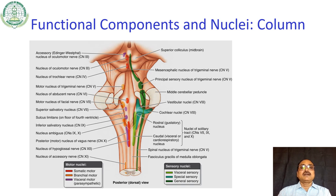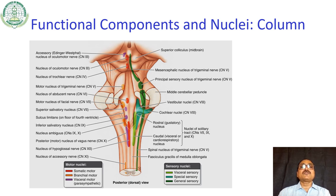The functional components can be categorized into motor nuclei and sensory nuclei. In motor, they may be somatic motor, branchial motor, and visceral motor or parasympathetic. The medial-most column is somatic motor, shown in red. The midbrain contains the somatic motor component of cranial nerve III, that is the oculomotor nerve. Somatic motor means supplying to the skeletal muscle.